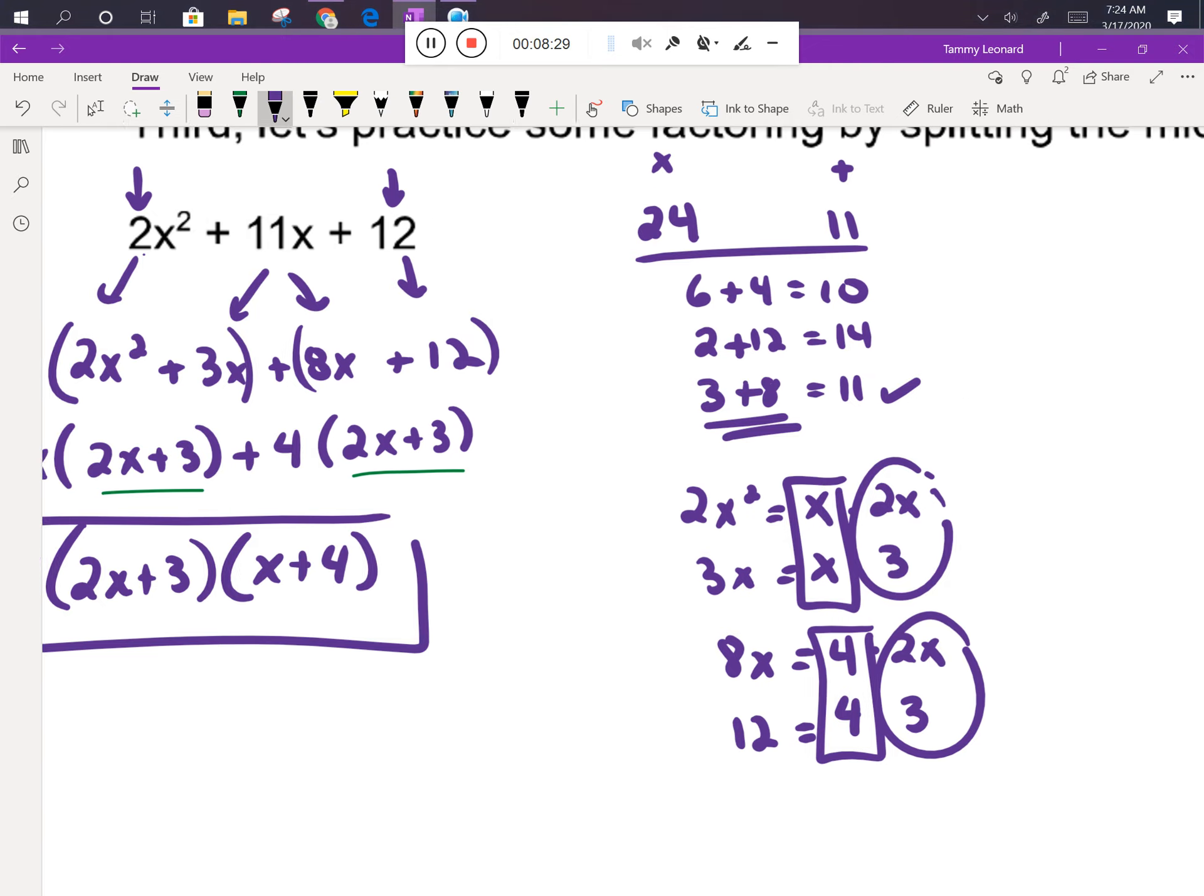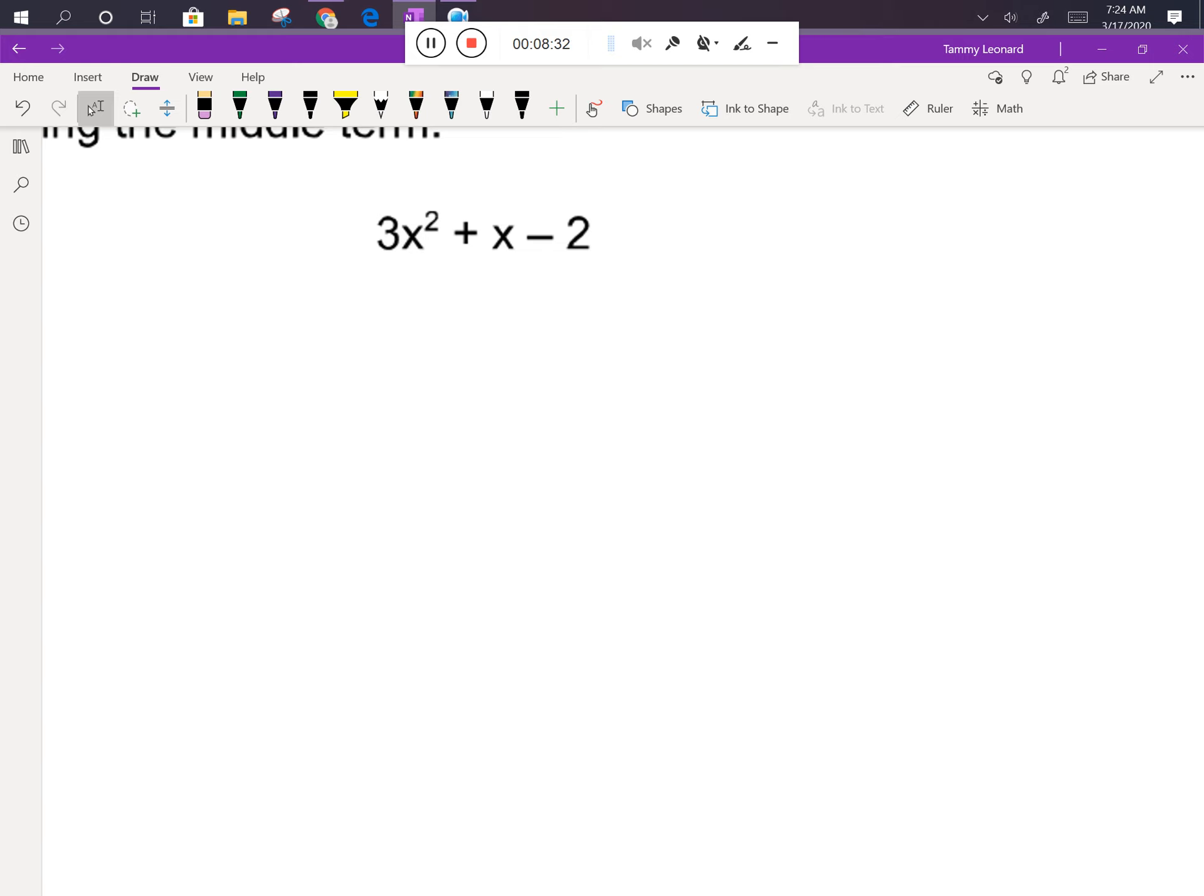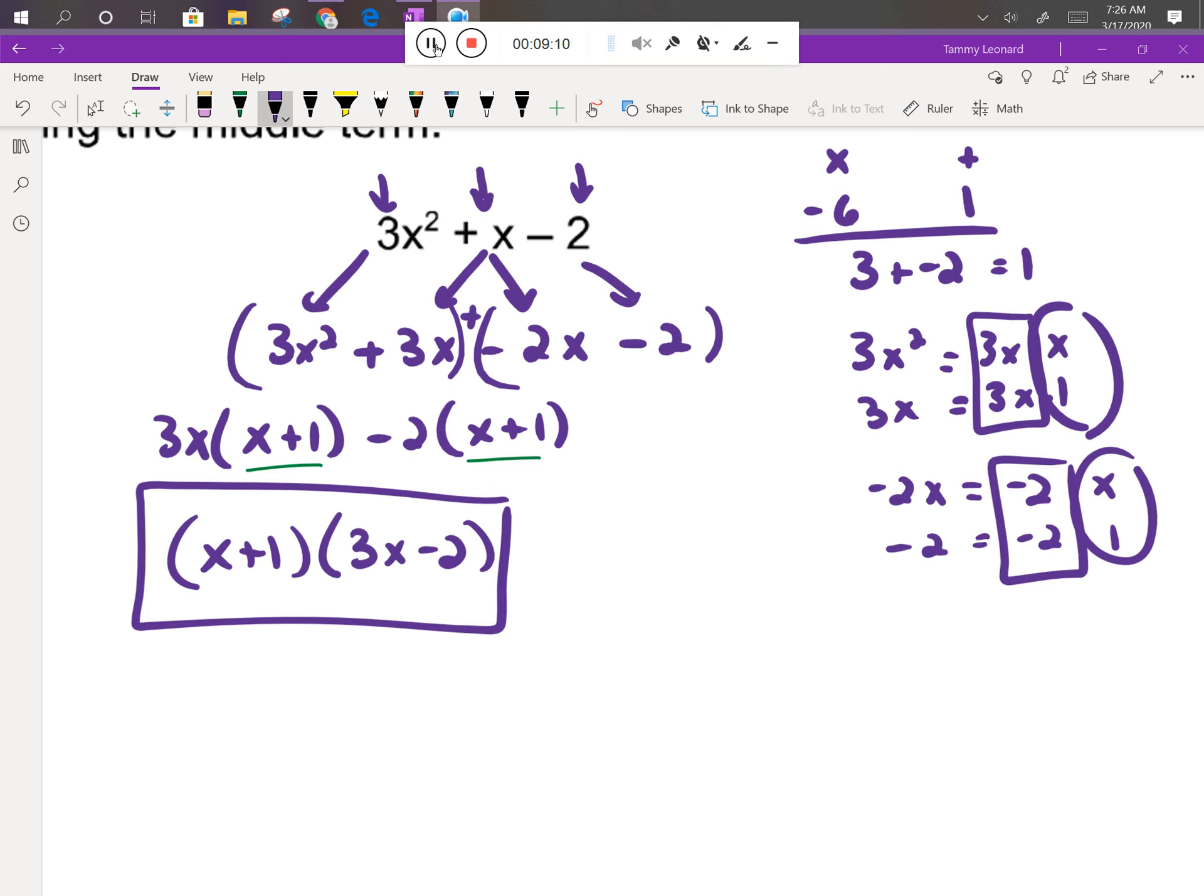All right, let's look at the last problem. Take a peek. Remember, your puzzle is going to be that you want to multiply to make 3 times -2, which is -6, and you want to add to make the remaining number. Now that's tricky because all we see in the middle is an x. Remember, if you only see x, that means you really have 1x. So you're looking for two numbers that multiply to make -6 and add to make 1. Push pause on the video and see if you can get through this problem. When you're done, go ahead and push play and you'll see my final answer.